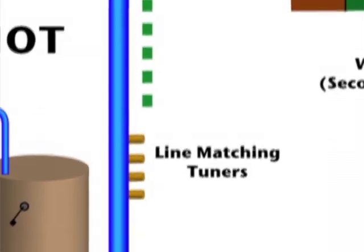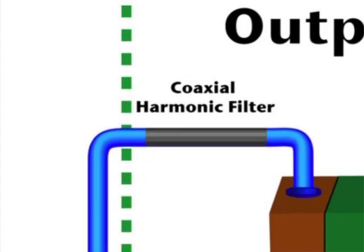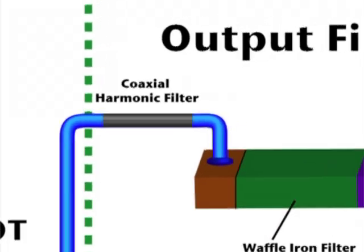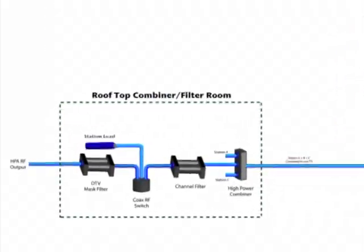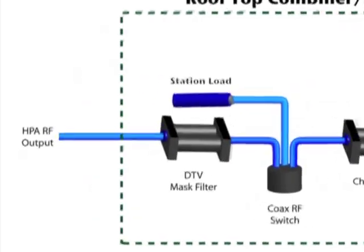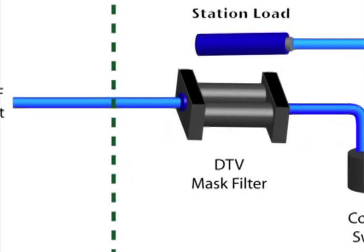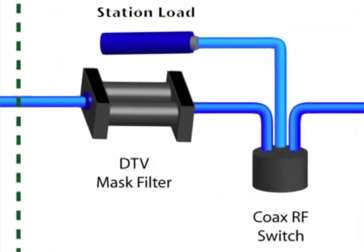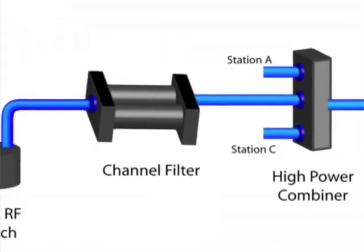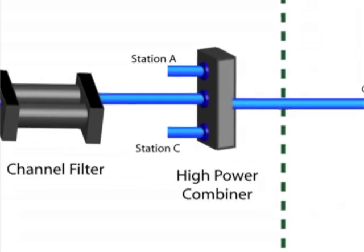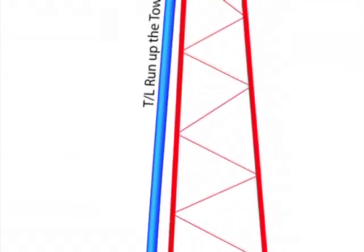Part 3 will begin at the output of the IoT and the initial filtering of the high power RF signal and the transmission line used to carry it. Part 4 starts at the mask filter and goes on through our switching and combining as well as the antenna. At the end of this series, you will have a basic understanding of what it takes to broadcast a digital signal over the air.